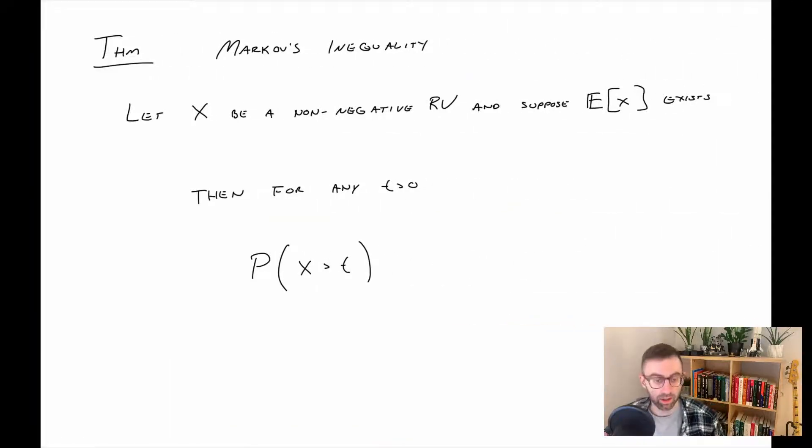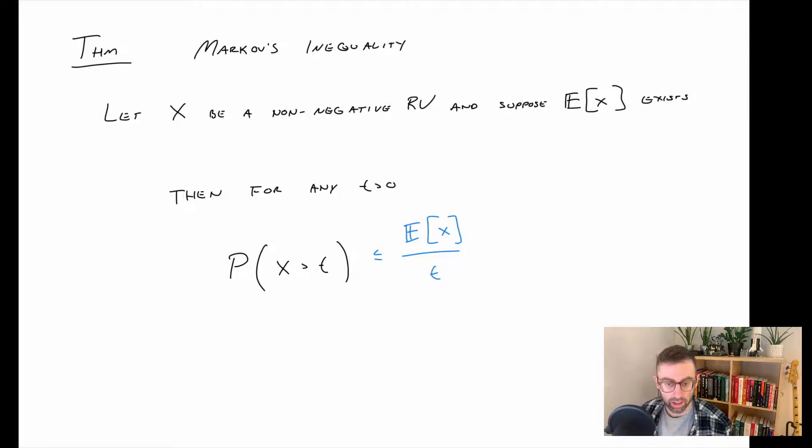So first inequality we're going to look at is Markov's inequality. Here we have some random variable x, and we need to add a condition that it is a non-negative random variable, so it can only take values zero or greater, and we also need to assume that the expected value of x exists. If that's the case, then the probability that x is greater than some positive value t is bounded by the expected value of x divided by t. We'll do a quick proof of this.